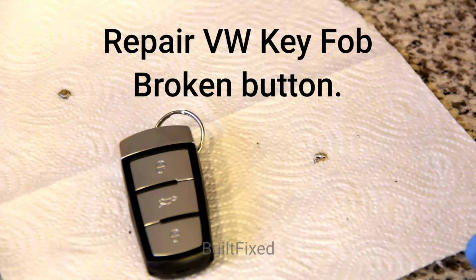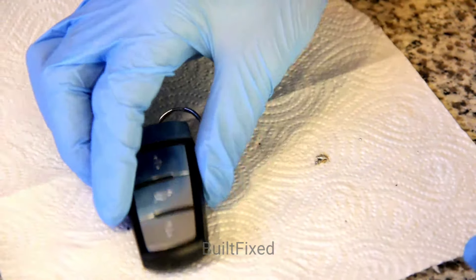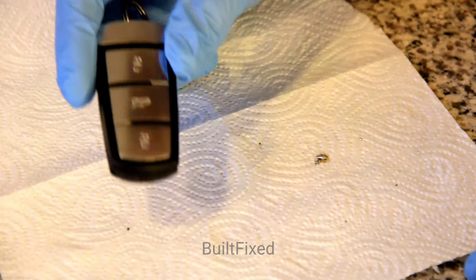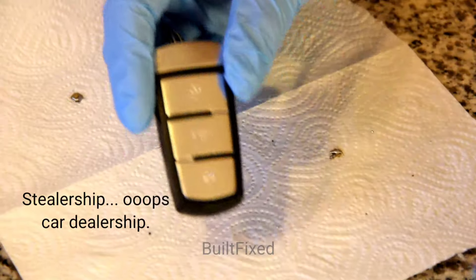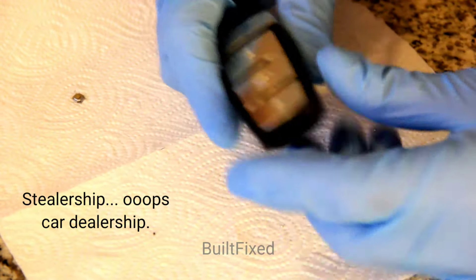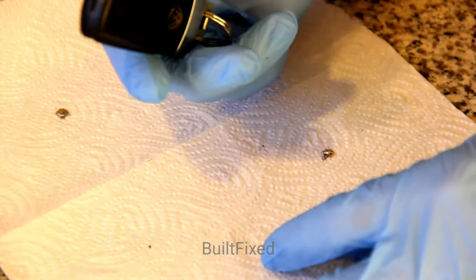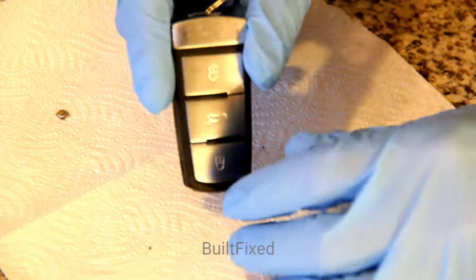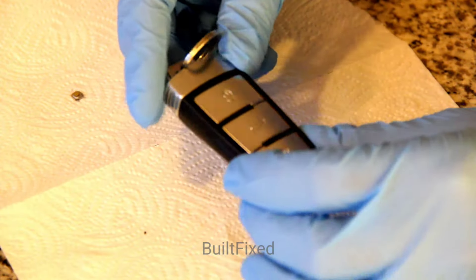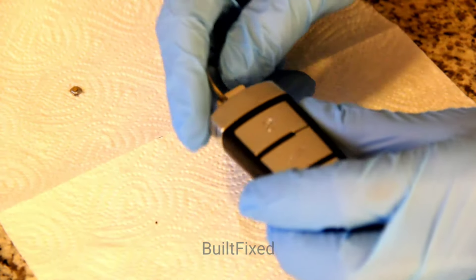Hey, welcome back to Built Fixed. I don't normally do episodes with car repair stuff, but there's nothing I hate worse than being ripped off at the dealership for repair. This key fob had stopped working and I had a quote of probably about $600 US dollars to have it replaced with a new one. I thought, you know what, that's kind of silly. I'll try my luck at fixing it myself.